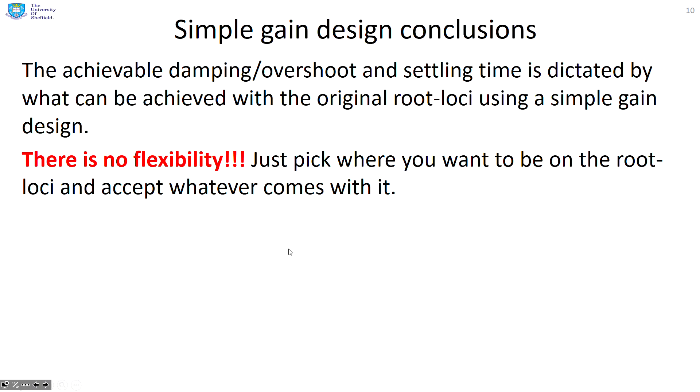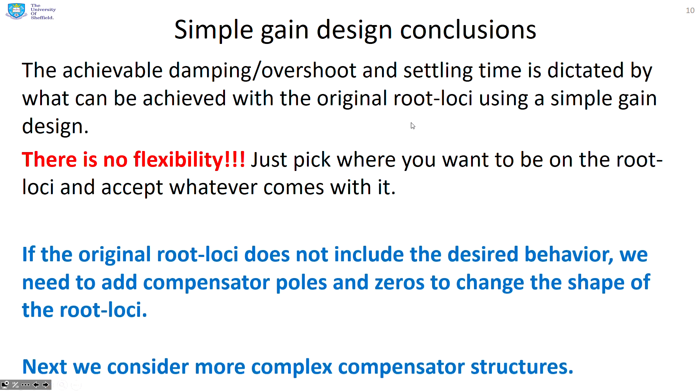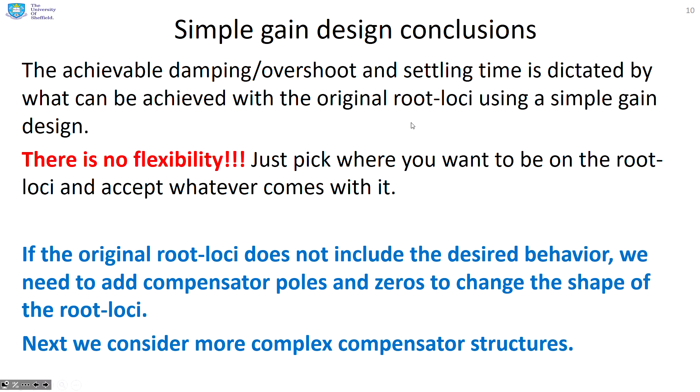So some conclusions. The achievable damping and overshoot and settling time is dictated by what can be achieved with the original root loci if you're just using a simple gain design. There's no flexibility. All you can do is pick a position on the root loci and say, what value of K will put me in that position? So what if the original root loci does not include the desired behavior we want? We're going to need to add compensator poles and zeros to change the shape. So in the following videos, we'll show how you can add a bit more flexibility to your design.